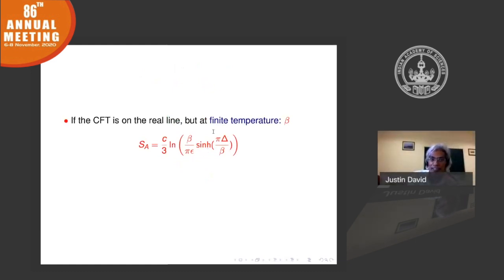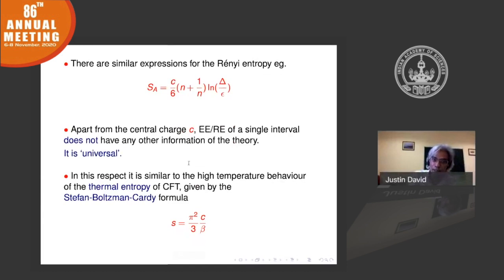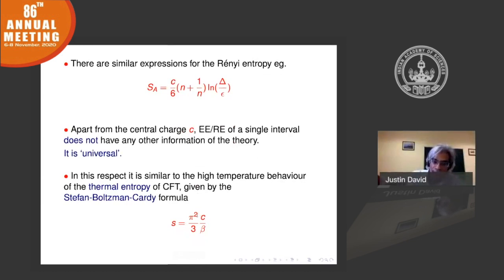These are exact results. From them you see that entanglement entropy is very universal — it just carries the information of the central charge. In this respect, the entanglement entropy does not provide much new information beyond the Cardy or Stefan-Boltzmann formula, where in one dimension the thermal entropy grows as temperature with a proportionality constant equal to the central charge.